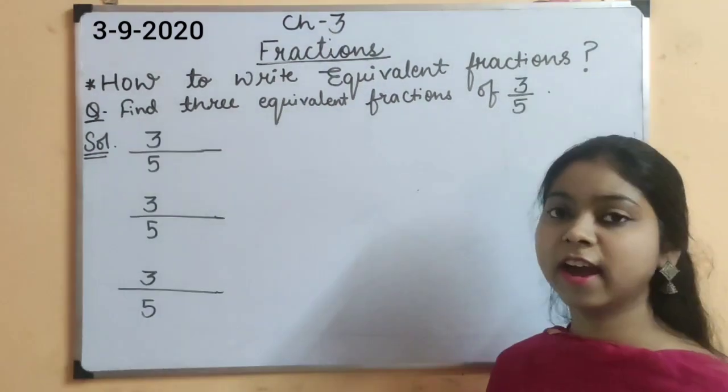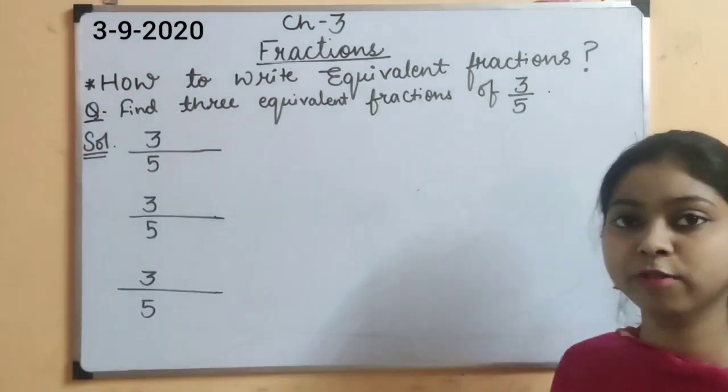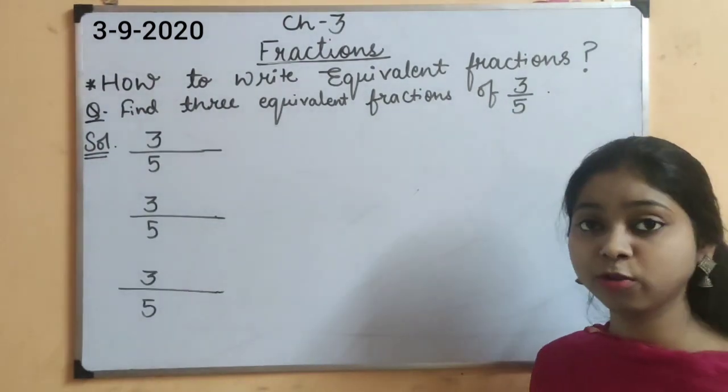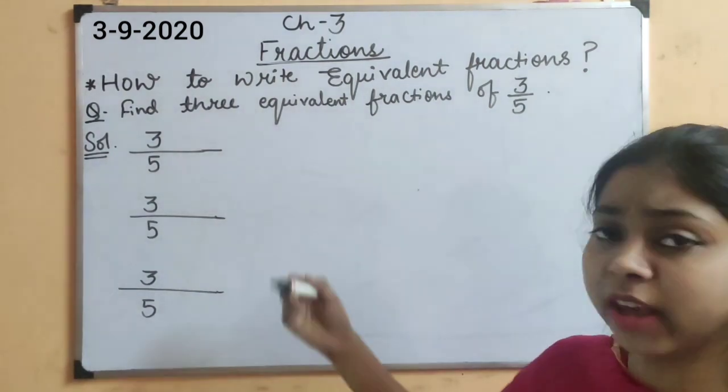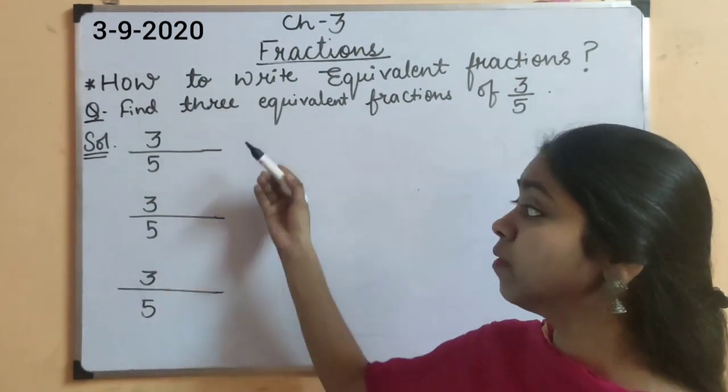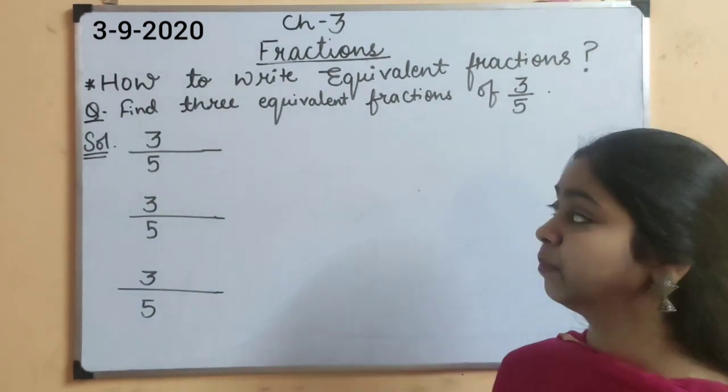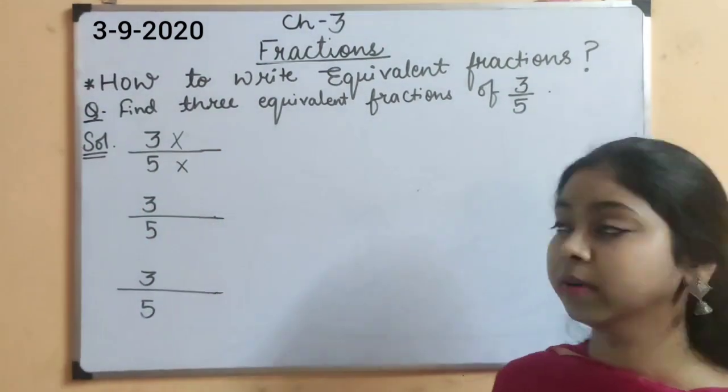Now, let's solve our next question. Find 3 equivalent fractions of 3 upon 5. Here in this question, we need to find these 3. But, can you check here that 3 and 5 do not have any common factor other than 1. So, we will not use the division method here.